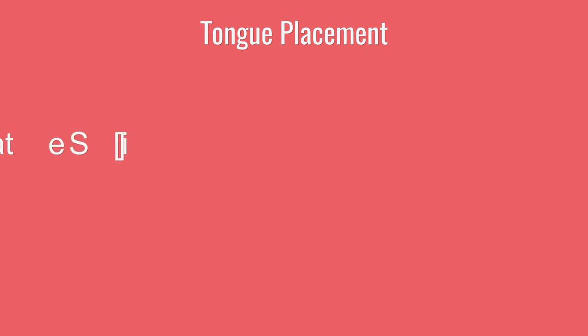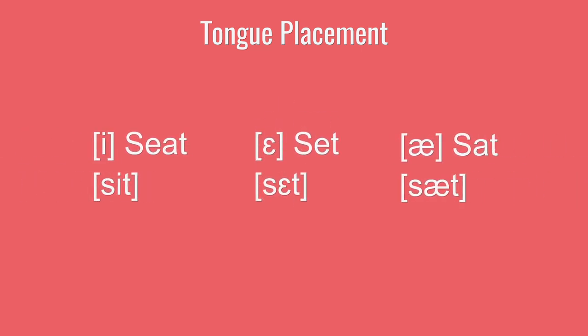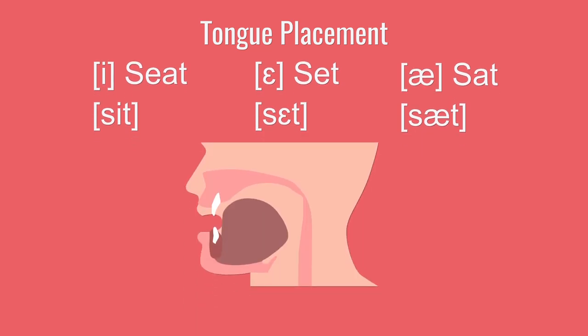We'll be talking a little bit about tongue placement, and just to give you a rough sense of that, I want you to try this. Compare E, E, and A in English, as in seat, sat, and sat. You'll notice that your tongue starts up high — E — and then it goes to the middle of your mouth — E — and then goes down to A. So your tongue can go up and it can go down.